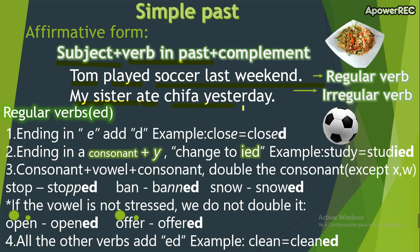Another example: 'My sister ate chifa yesterday.' Notice we have two types of verbs here: 'played' and 'ate.' 'Played' is easy — it's the past of 'play,' formed simply by adding -ed. But 'ate' is the past of 'eat' — these verbs are known as irregular verbs, because they don't follow the same pattern.